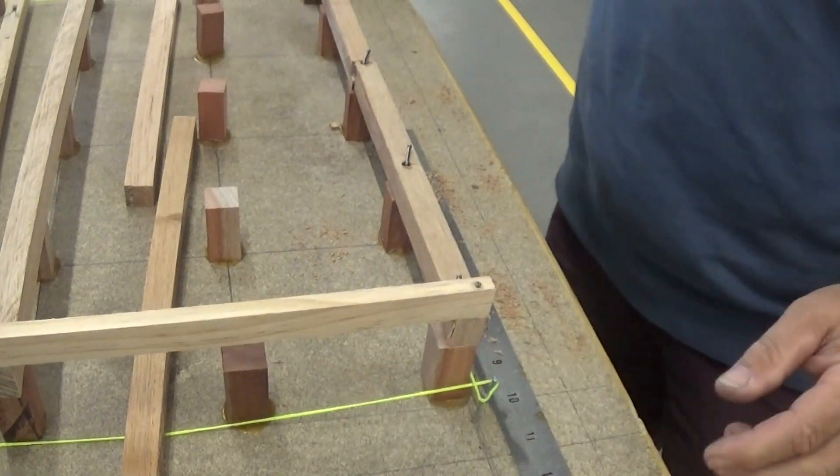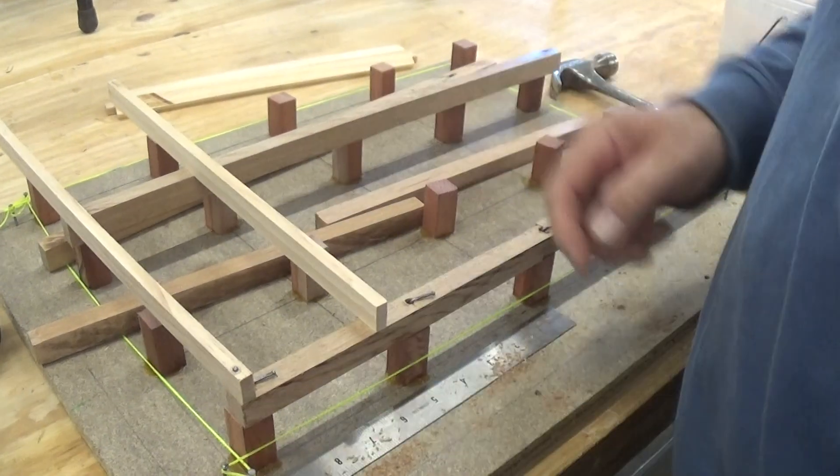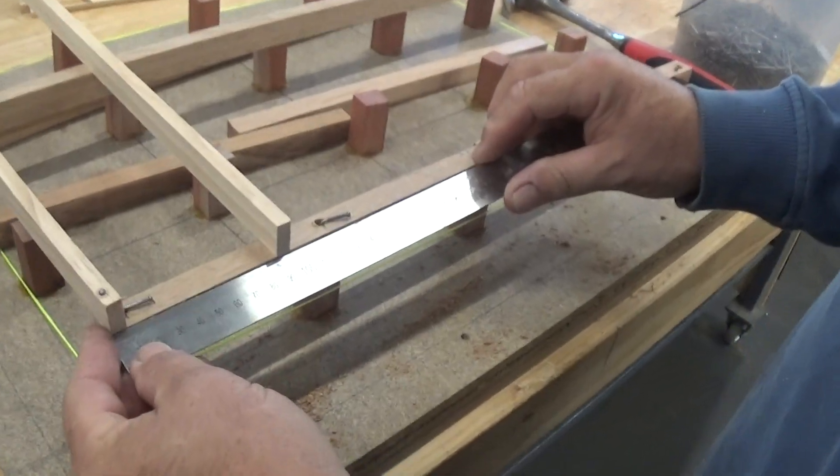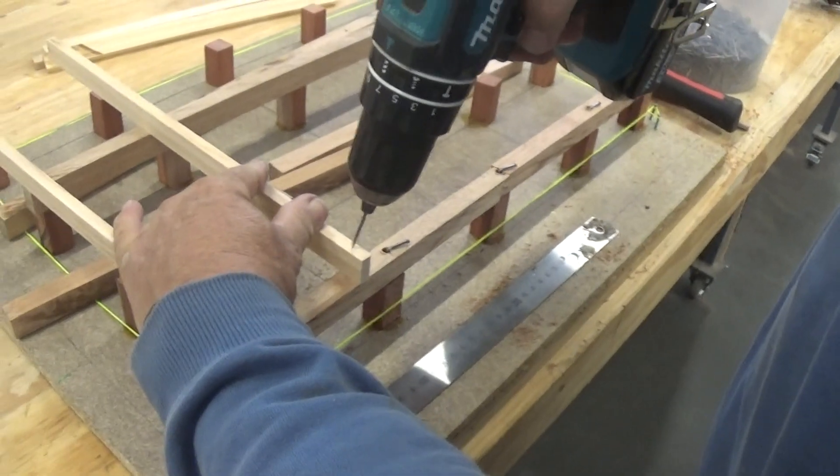You should be able to nail them on easily like that. So I think it's every hundred millimeters of your spacing, so that one can go there. So this is how you nail on your joists.